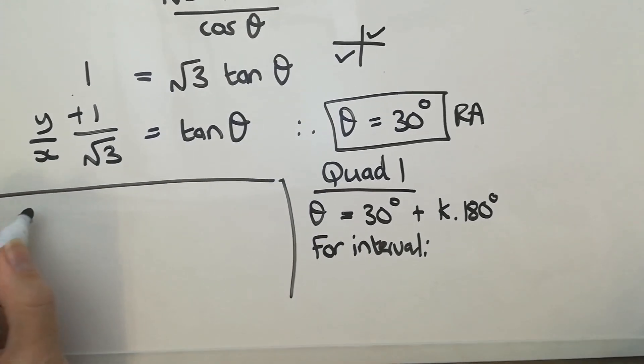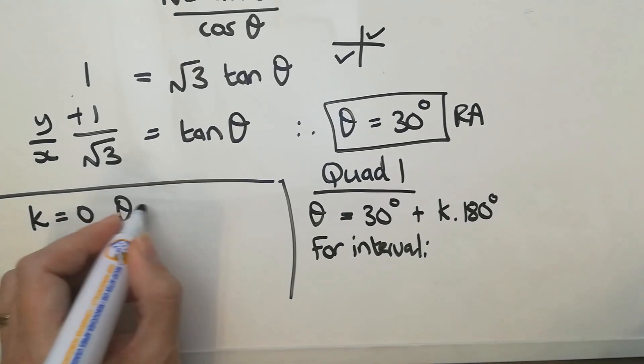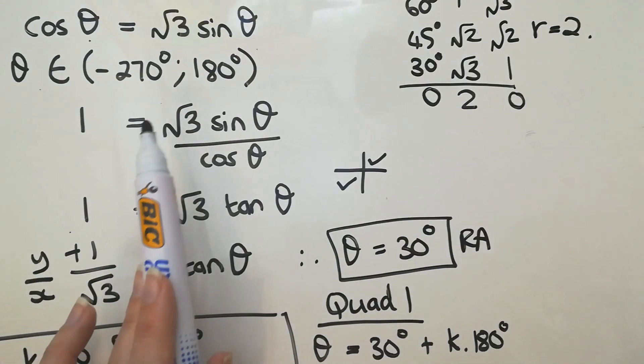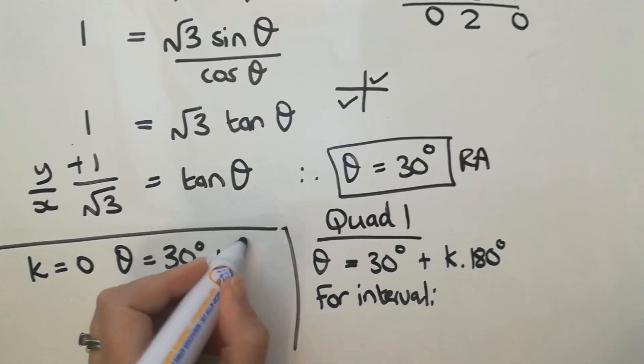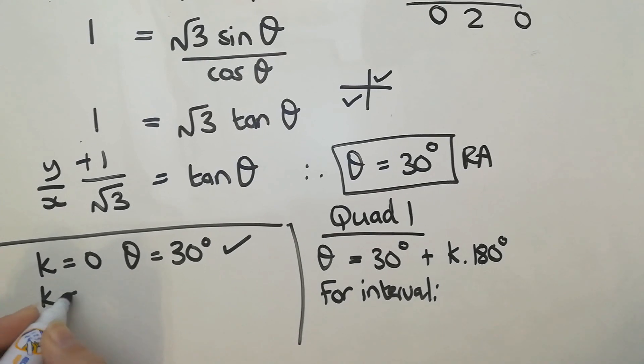Let's check out the different k's. Because if k equals 0, then obviously theta will be 30. Does that fit into negative 270 to 180? Yep. Okay, there might be quite a few here because that's quite a big interval.